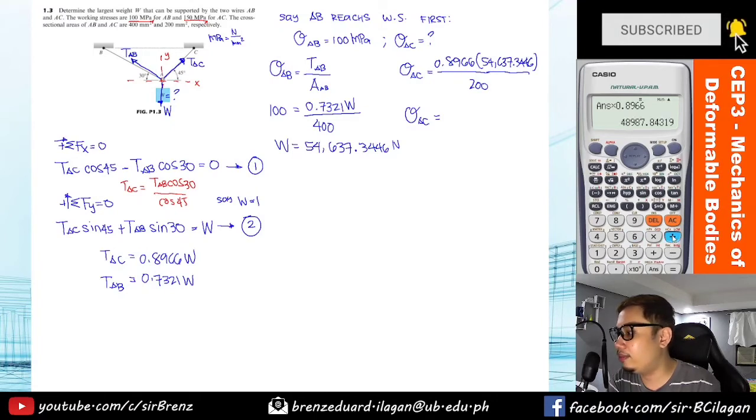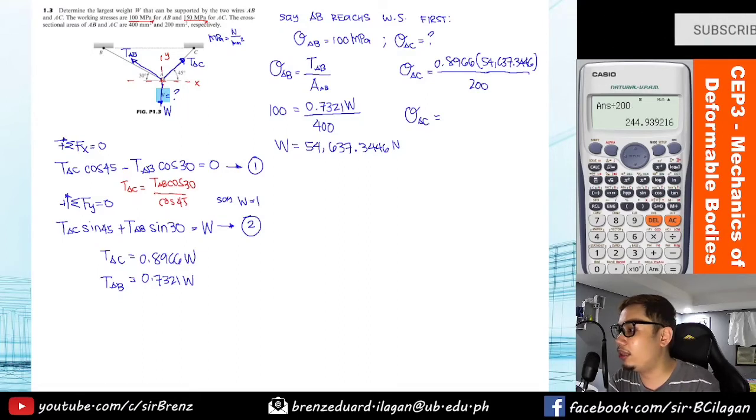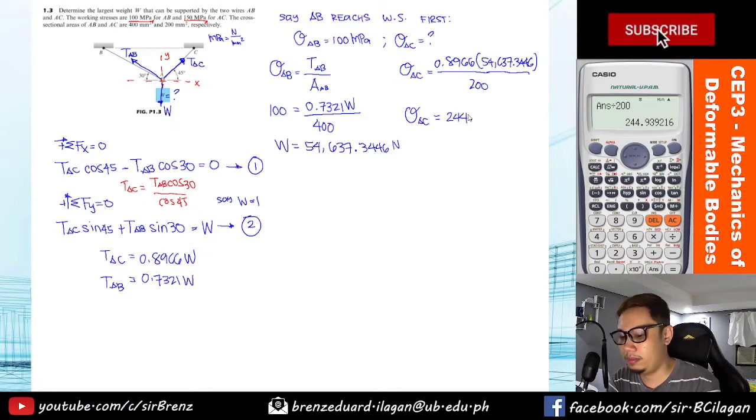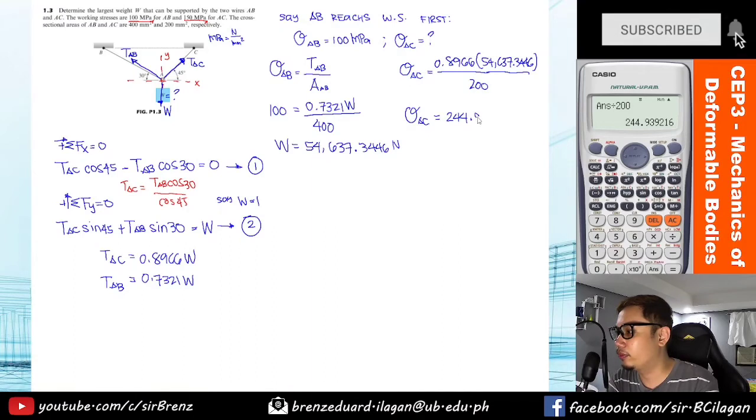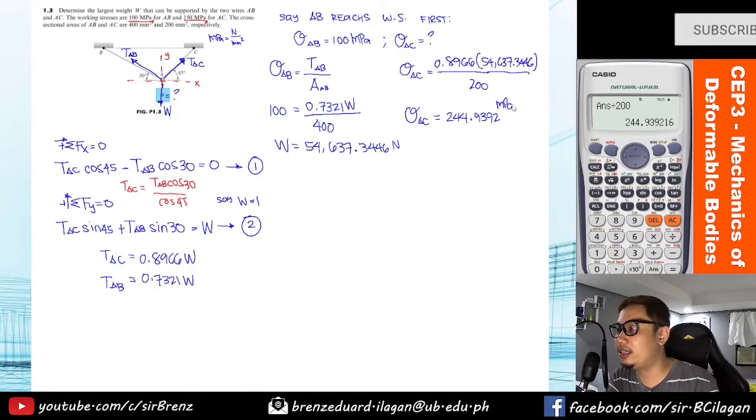So answer times 0.8966 and then divided by 200, so that is 244.9392 megapascals.